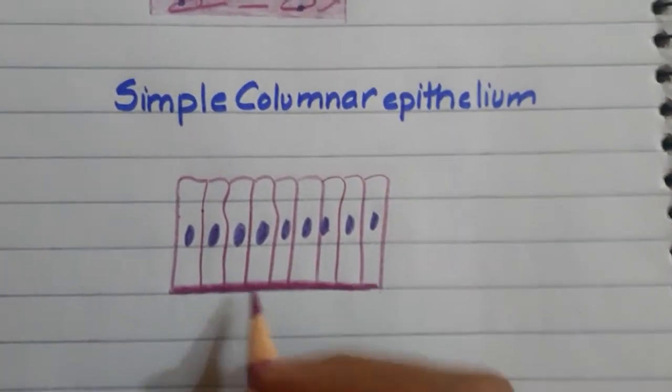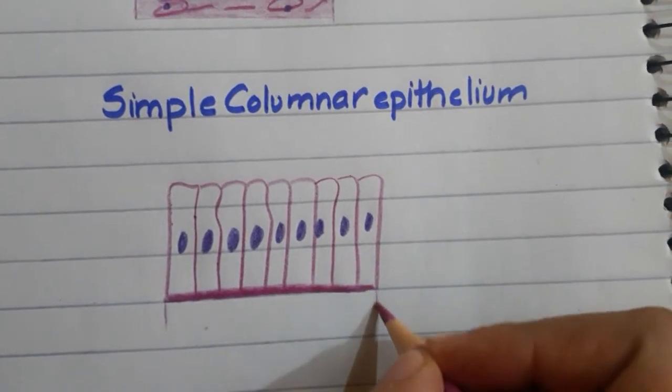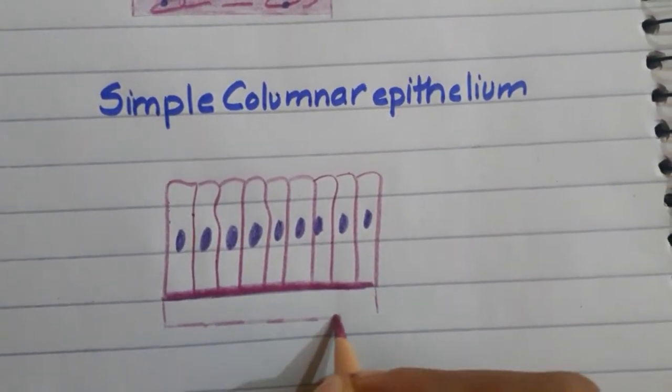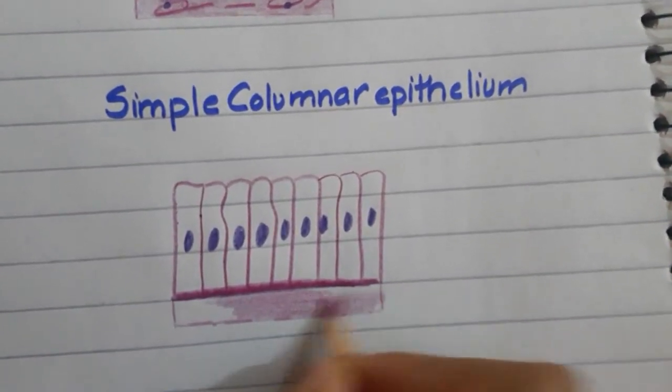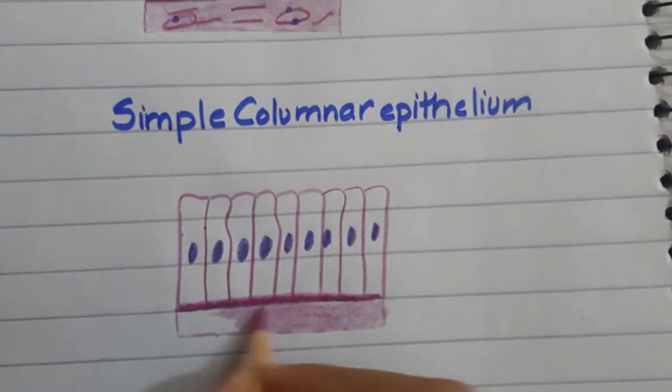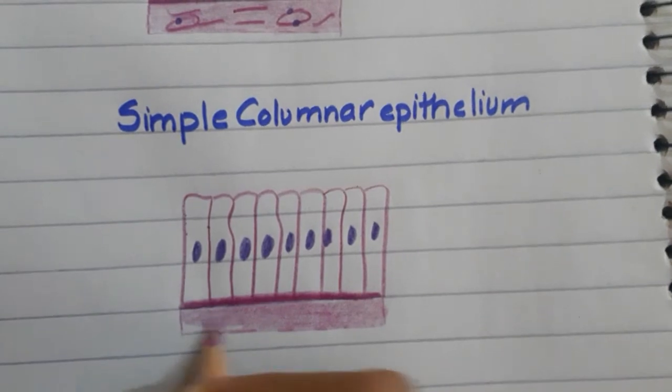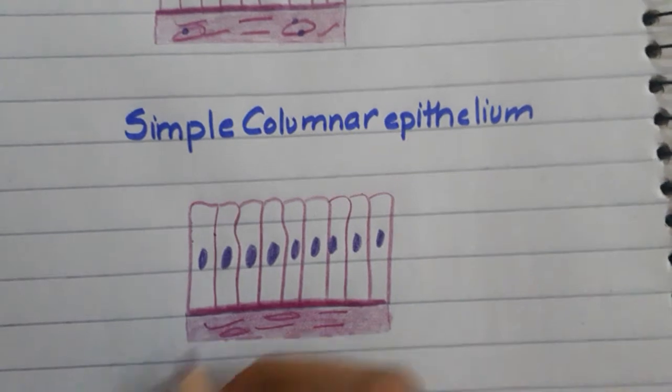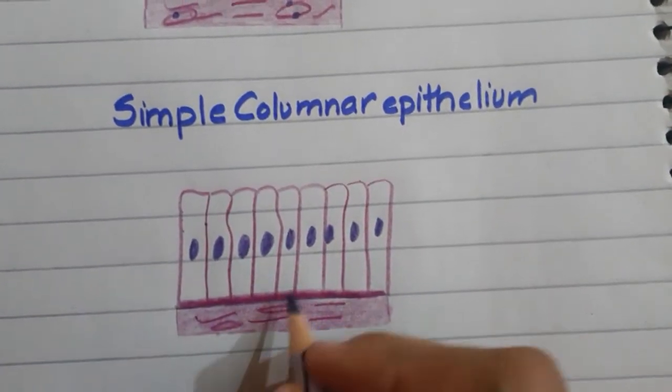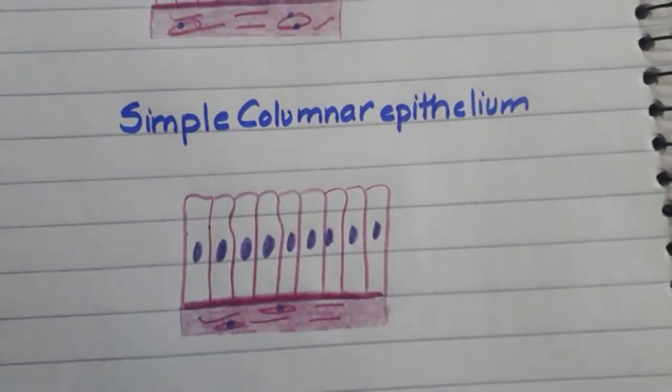This is our dark basal membrane. With this we will make a little pink color and we will color it as usual the simple epithelium. What do we have? We have some dark color lines and some circles, and in the circles purple dots. That's it.